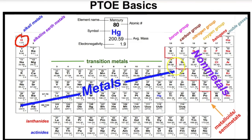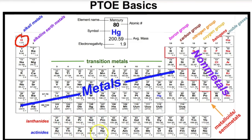If an element falls directly on the stair step line, it's a metalloid or semi-metal, with a few exceptions — for example, aluminum is technically a metal, not a metalloid. At the bottom of the periodic table, you have the lanthanide series and the actinides. We'll talk about the physical and chemical properties of those in a later video.